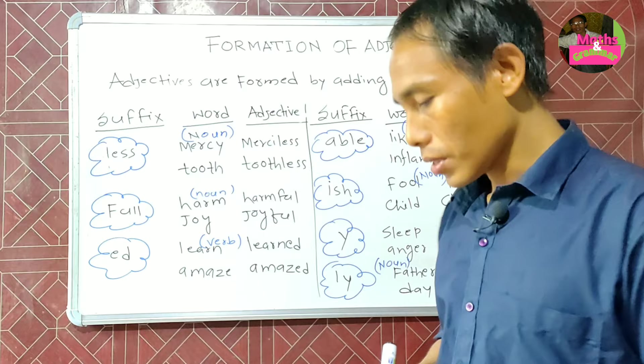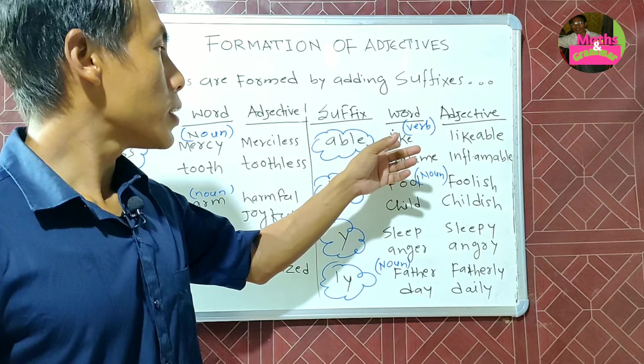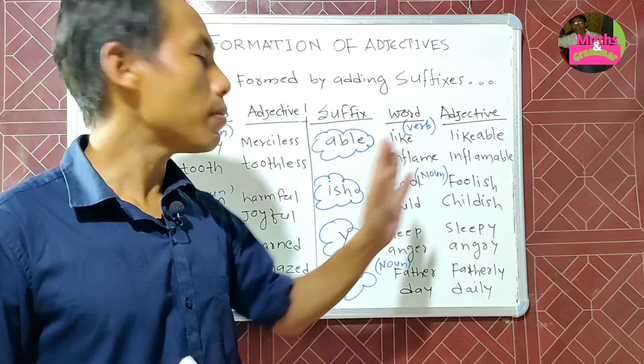Now see the suffix '-able.' 'Like' is the word, so it becomes 'likeable.' Similarly, 'inflame' becomes 'inflammable.'